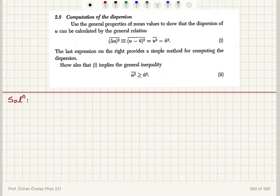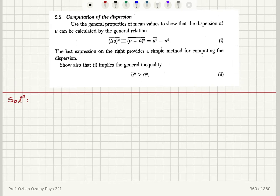Computation of the dispersion. Use the general properties of mean values to show that the dispersion of u can be calculated by the general relation: delta u squared bar equals u squared average minus u average squared. The last expression on the right provides a simple method for computing the dispersion. Show that this also implies the general inequality: u squared mean value is greater or equal to u mean value squared.